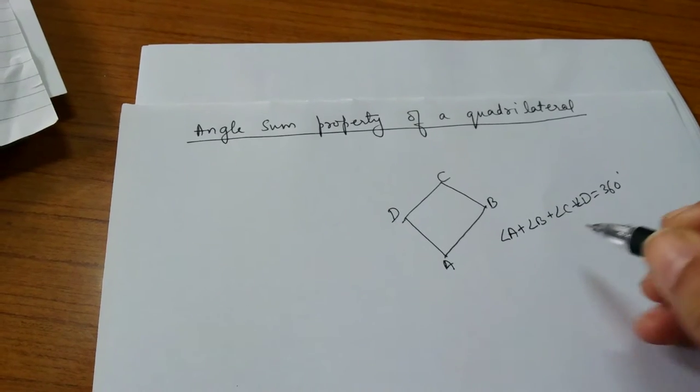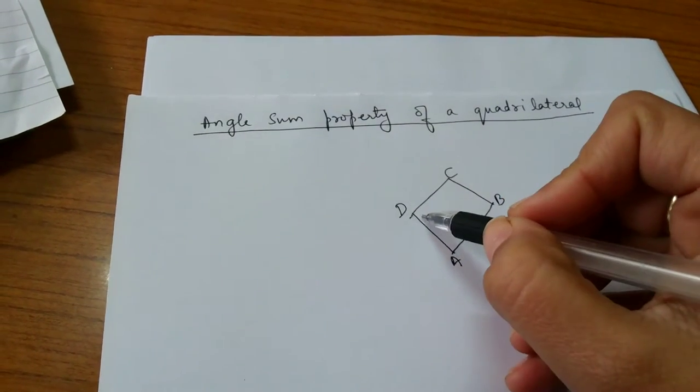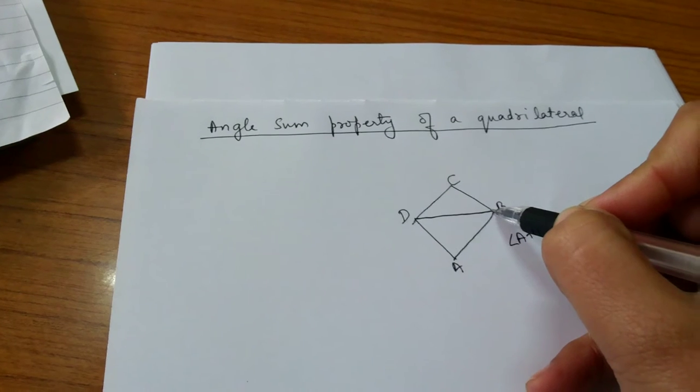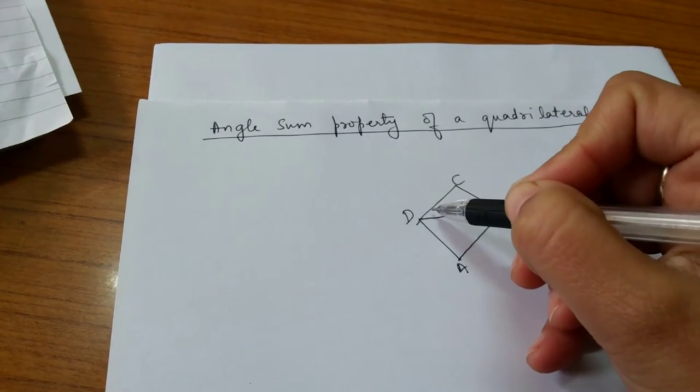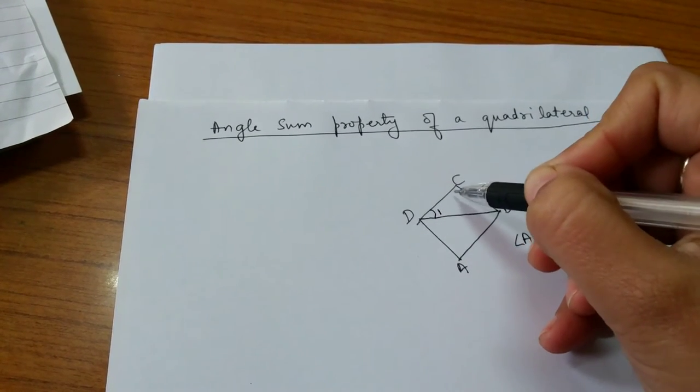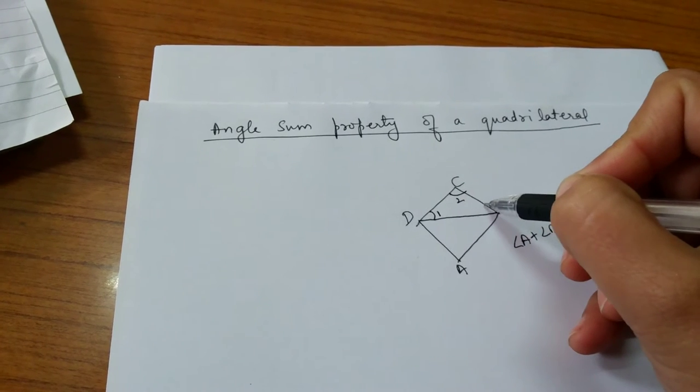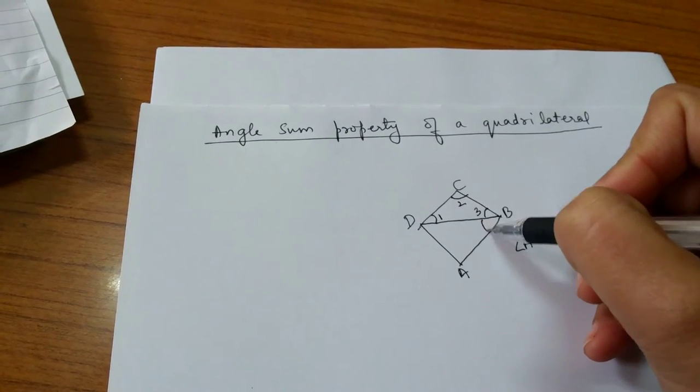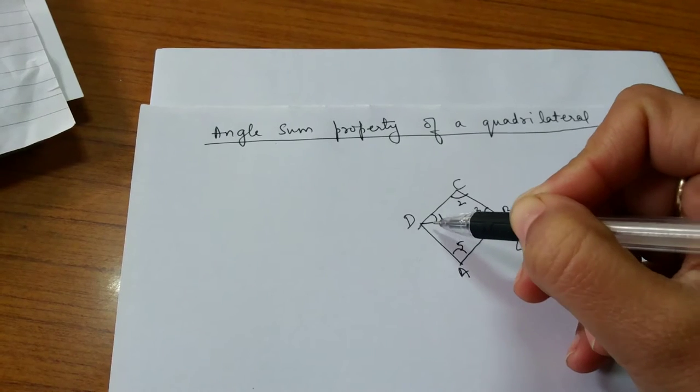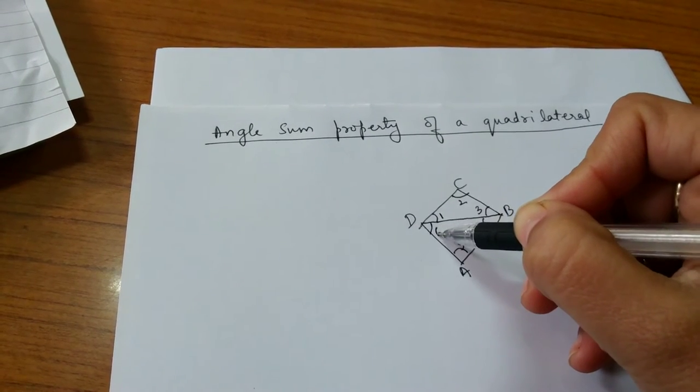We will prove this. Let us join diagonal BD and label angles: angle 1, angle 2, angle 3, angle 4, angle 5, and angle 6.